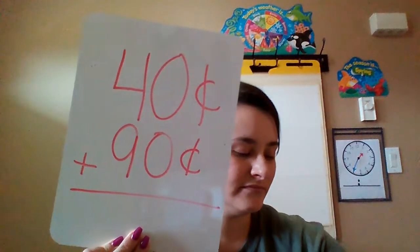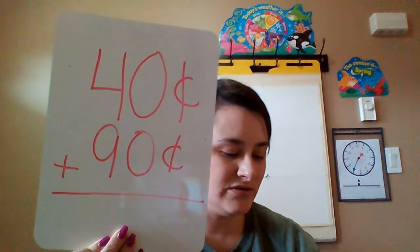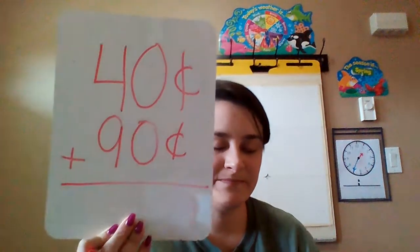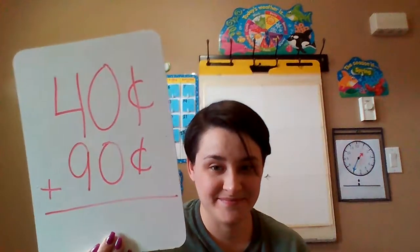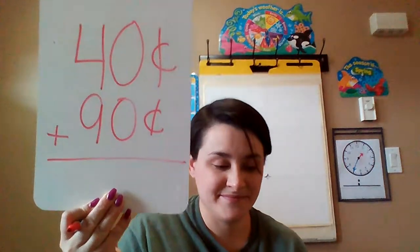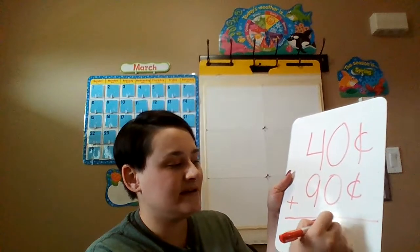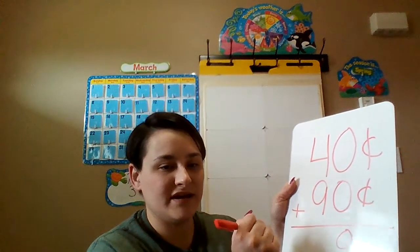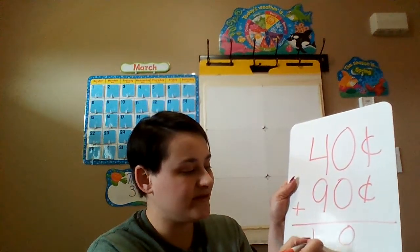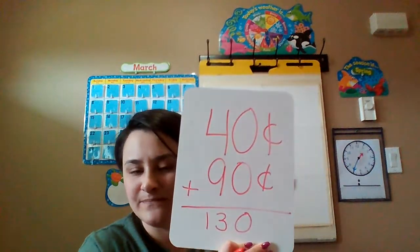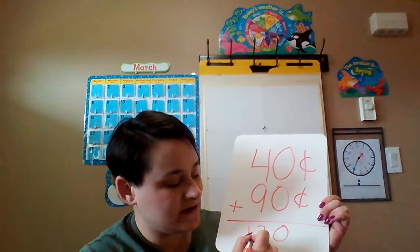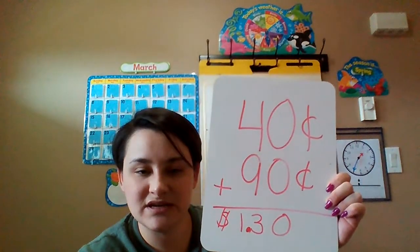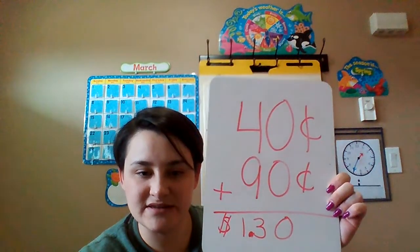Let's add. If you have pencil and paper, you can do this on your own and I'll give you a second. Ready? Zero and zero make zero. Nine and four — nine, count up four more is 13. Oh no, can we have 130 cents? Looks like 100 cents is a dollar, so we need to put our decimal point in. There are always two numbers between the decimal point and the dollar. So if you came up with $1.30, you are correct.